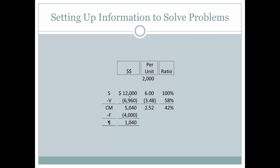Additionally, if we only had $6 per unit and we knew the number of units sold as being 2,000, then we can come up with a total dollar value of $12,000. We know how much the total variable costs were, so dividing by 2,000 gives us $3.48 per unit. We don't even really have to calculate the contribution margin separately, because it is simply the variable expenses per unit subtracted from the per-unit sales price. Or, we could take $5,040 and divide it by 2,000 in order to come up with the contribution margin per unit.